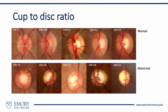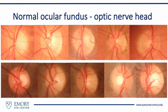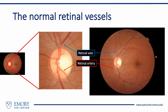A cup-to-disc ratio exceeding 0.5 is considered abnormal. The normal optic nerve head can show considerable variation in size, shape, color, morphology, and vascular branching pattern. The retinal vessels are branches of the central retinal artery and the central retinal vein. The larger, darker vessels are the retinal veins, while the smaller, brighter vessels are the retinal arteries.